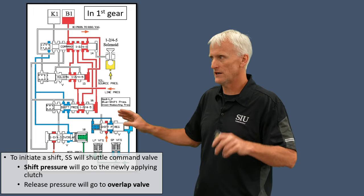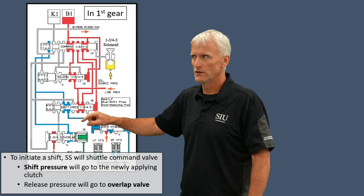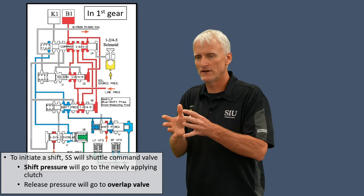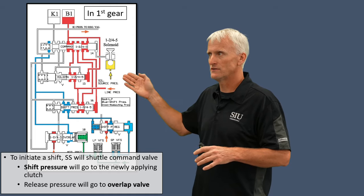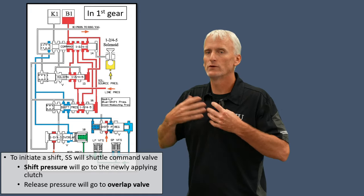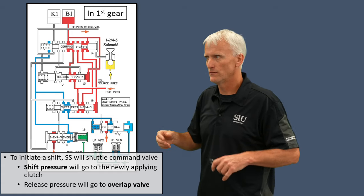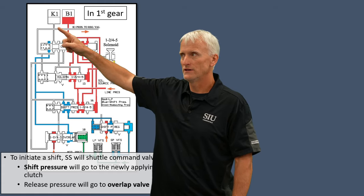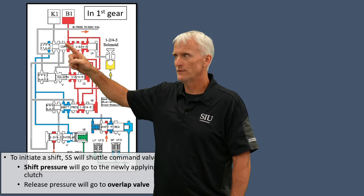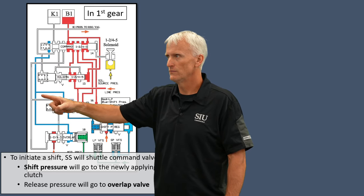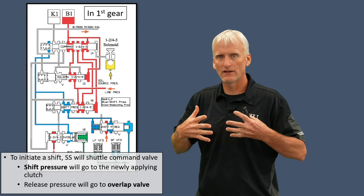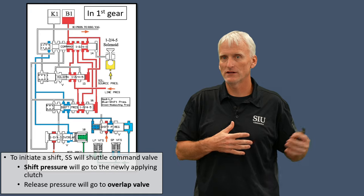The shift pressure from the regulator gets directed to the shift pressure valve for the shift group and just waits there — it's not going anywhere because we're not in a shift phase. There are in-gear phases and shift phases. Once the solenoid turns on and initiates a shift, that shift pressure will do its job and start applying a clutch. The overlap valve is also present — the K1 clutch is currently fully released and vented. If the command valve shuttled over, the fluid in the B1 at full line pressure would get directed down through the overlap valve and exhaust out. The shift pressure and overlap valve work together to control the rate of release on the releasing clutch and the rate of apply on the applying clutch.